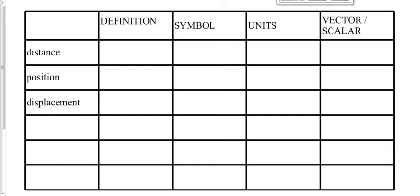A quick review of the table from yesterday. Distance is defined as how far an object has traveled. If I drive 340 kilometers to Edmonton, that's my distance traveled. Is distance a vector or a scalar? It's a scalar — direction doesn't matter. 340 kilometers, done.